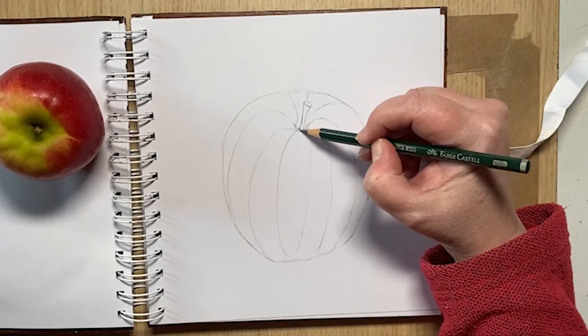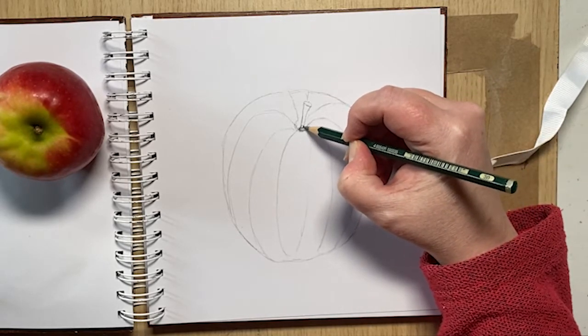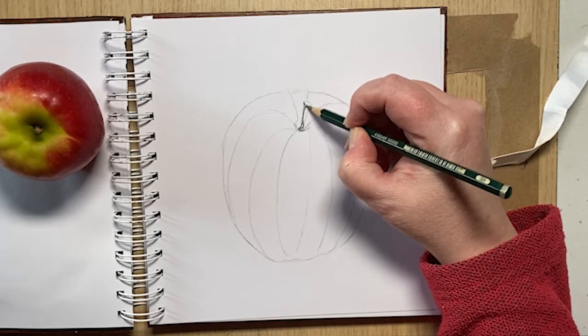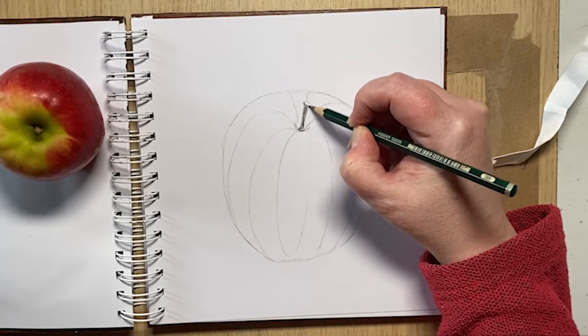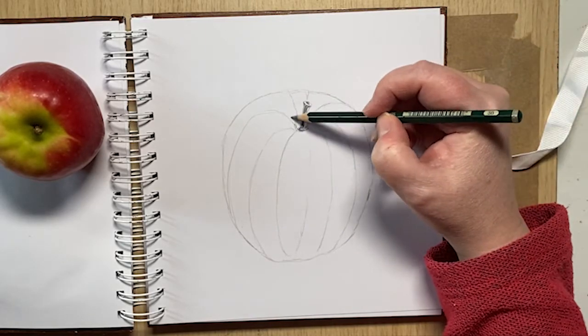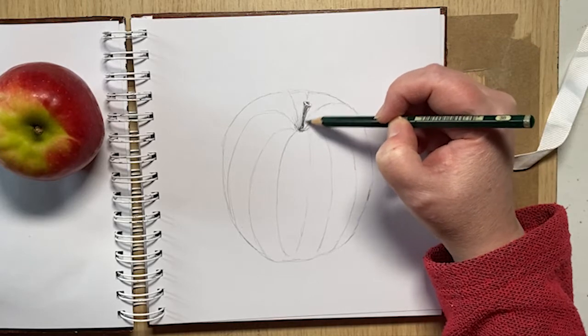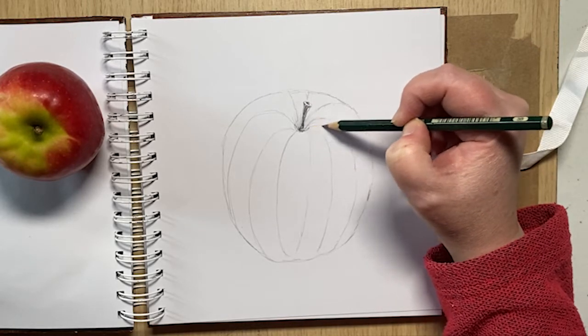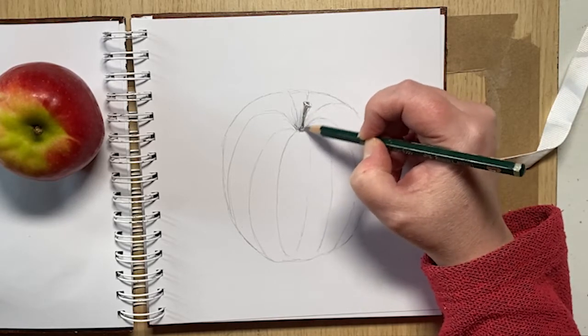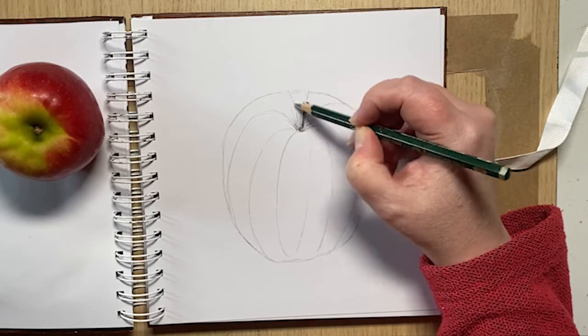For the first part of the shading, I'm still using the 3B pencil. I'm just going to go in with the darkest bit, which is the stalk. And inside the apple is quite dark as well, so I'm just going to follow those contour lines with my pencil. Just do little strokes going in the same direction as the contour lines, just to give a bit of definition.